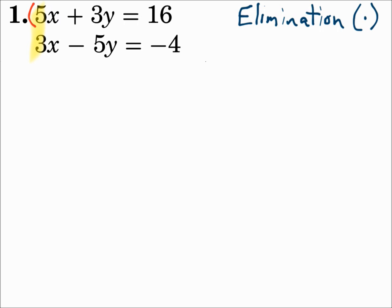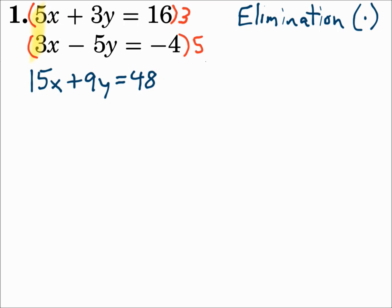Multiply the top equation by 3, since the bottom equation's x coefficient is 3, and multiply the bottom equation by 5, since the top equation has an x coefficient of 5 — each equation times the other equation's coefficient. The top equation becomes 15x plus 9y equals 48, and the bottom equation becomes 15x minus 25y equals negative 20. Now the x's have matching coefficients, so they can eliminate. Since the signs are the same, we'll subtract these equations.